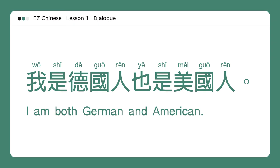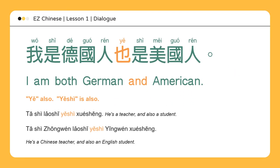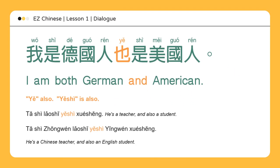I am both German and American. 也 means "also." 也是 means "is also." 他是老师也是学生 — he's a teacher and also a student. 他是中文老师也是英文学生 — he's a Chinese teacher and also an English student.